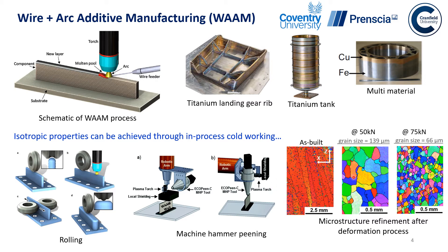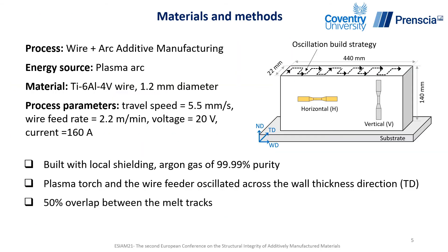The experimental materials for this study were built using wire and arc additive manufacturing process, where we used plasma arc as the energy source and Ti-64 wire with 1.2 mm diameter as raw material. The other process parameters are also given here. On the right hand side you will see a schematic representation of the wall we have built for this study.